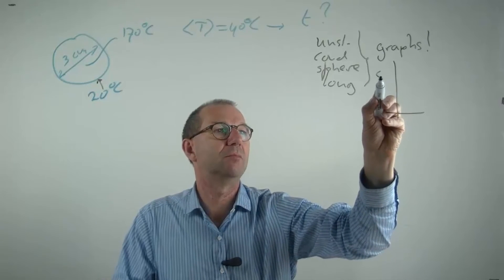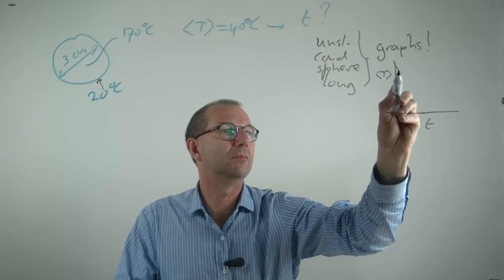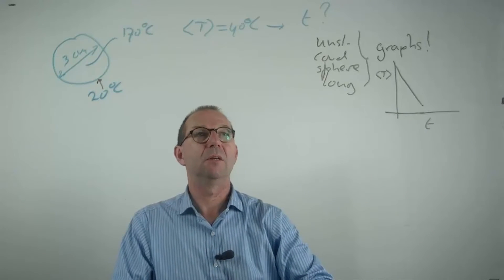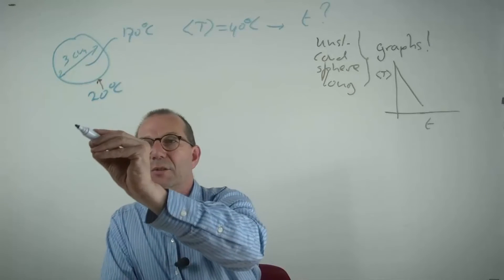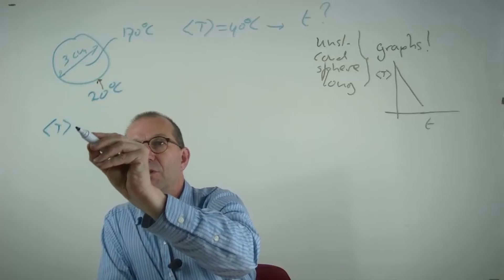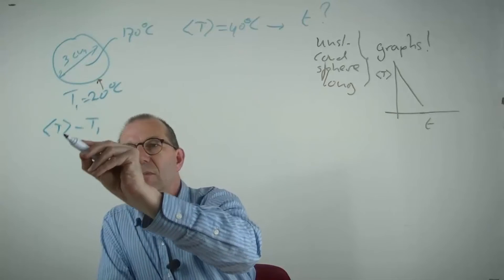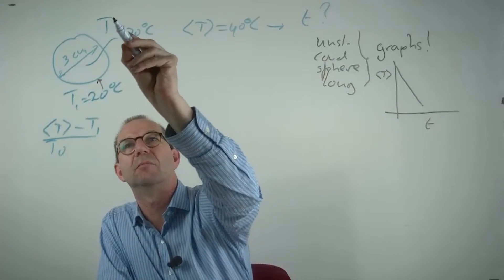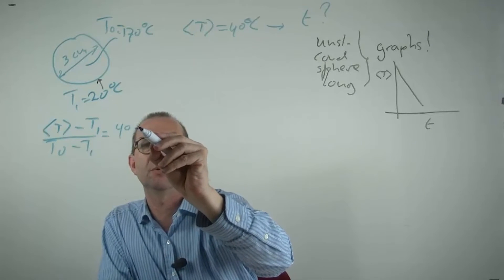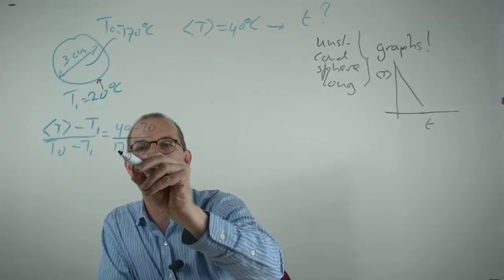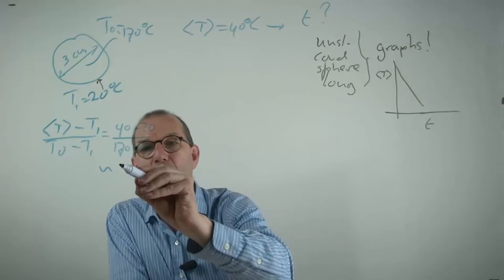Okay, so first we need to compute the dimensionless temperature as required. Hence, the average temperature minus the 20 degrees wall temperature divided by the initial temperature minus the wall temperature. That is 40 minus 20 over 170 minus 20, which is roughly 0.14.